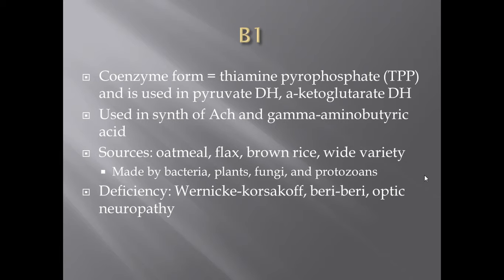B1 is thiamine. Thiamine itself isn't a coenzyme, but when it gets converted to thiamine pyrophosphate (TPP), that form is used in a few key reactions. If you watched my pyruvate dehydrogenase video, thiamine is used in that reaction — converting pyruvate into acetyl-CoA. Without B1, that enzyme cannot do its job. Thiamine is also required for alpha-ketoglutarate dehydrogenase in the citric acid cycle, and for the synthesis of acetylcholine and GABA.